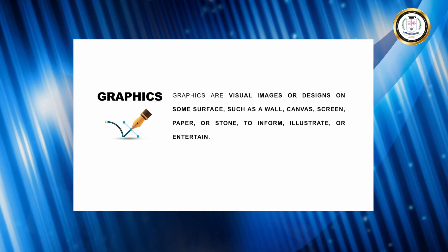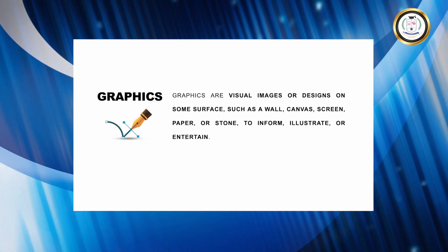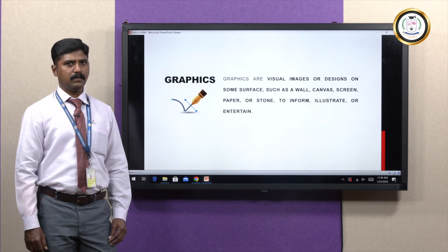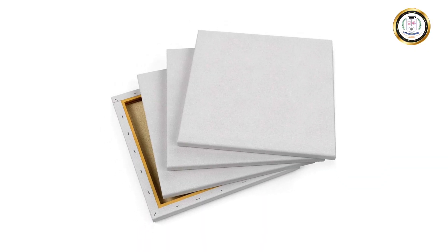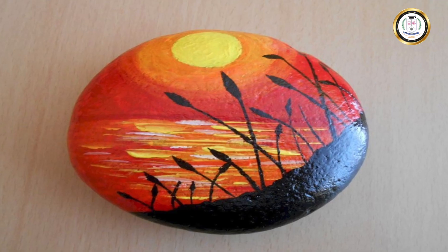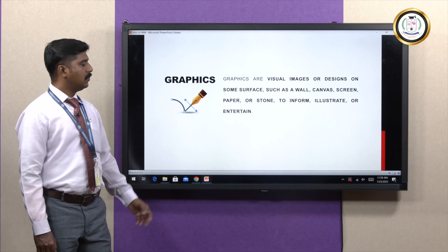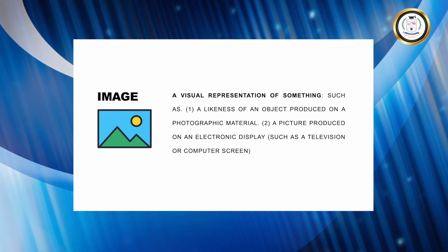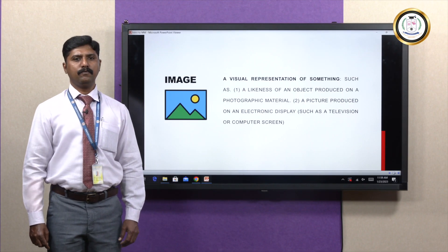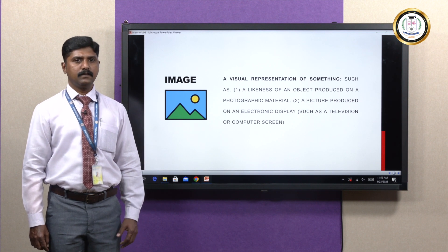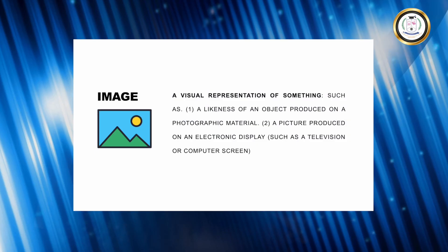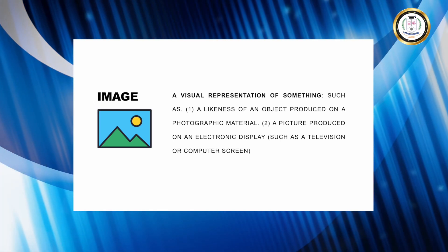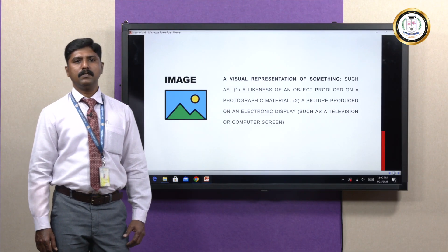Next to audio is graphics. Graphics are visual images or designs on some surface such as a wall, canvas, screen, paper, or stone — to inform, illustrate, or entertain. Following graphics we will see about image. A visual representation of something, such as a likeness of an object produced on a photographic material, or a picture produced on an electronic display such as a television or computer.